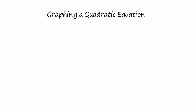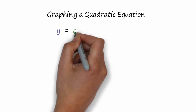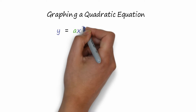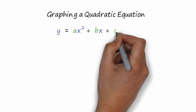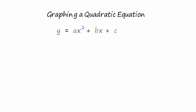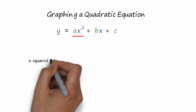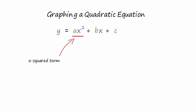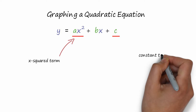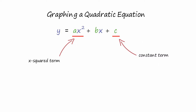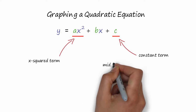Let's look at the form of a quadratic equation: Y equals AX squared plus BX plus C, where the first term, AX squared, is called the X squared term. The plus C at the end is called the constant term. The BX in the middle, we'll just call that the middle term.